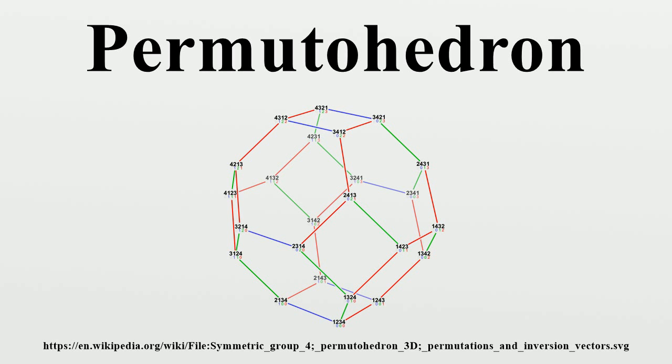Thus, the permutohedron of order 4 shown above tiles the three-dimensional space by translation. Here the three-dimensional space is the affine subspace of the four-dimensional space R^4 with coordinates x, y, z, w that consists of the four-tuples of real numbers whose sum is 10: x + y + z + w = 10.